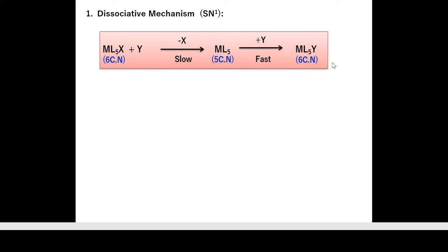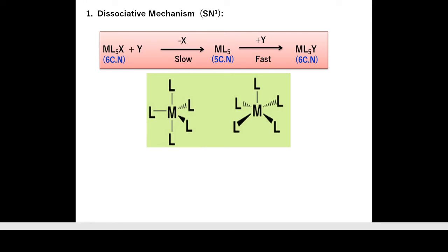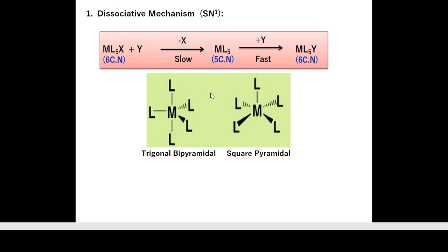In the dissociative mechanism, the intermediate has five coordination number. There are two possible geometries for a five-coordinate intermediate: trigonal bipyramidal and square pyramidal. Both have coordination number five.